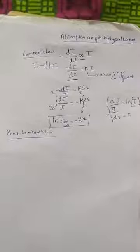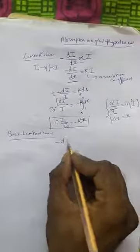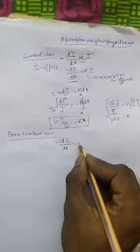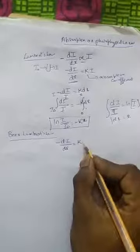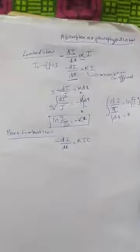In Lambert's Law, the rate of decrease in intensity is directly proportional only to the intensity of the incident radiation. Whereas in Beer-Lambert's Law it is proportional to both the intensity of the incident radiation and the concentration of the absorbing medium. So minus dI/dx equals K times I times C, where K is again the absorption coefficient.